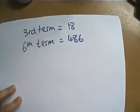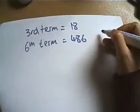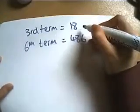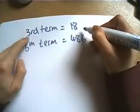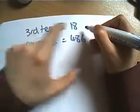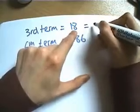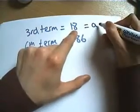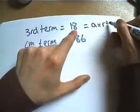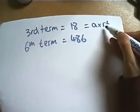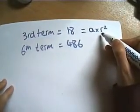We just need to think about what this means in terms of each term of the series and in terms of the algebra. So let's have a think. If it's the third term, what have I done to get to the number 18? I've taken the first term, a, and I've timesed it by r to the power of 2, haven't I? I've timesed it by r and times it by r again to get to the third term.